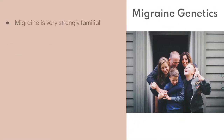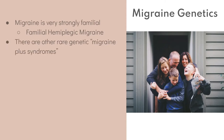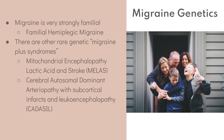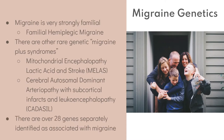Migraine is very strongly familial. There are even subtypes such as familial hemiplegic migraine, which run extremely strongly in families. There are other rare genetic migraine syndromes — a lot of these have long names, so we give them acronyms such as MILAS, which stands for mitochondrial encephalopathy with lactic acidosis and stroke, and CADASIL — cerebral autosomal dominant arteriopathy with subcortical infarcts and leukoencephalopathy. These are rare genetic conditions that have migraine plus other neurological issues, and they have helped us identify a number of genes associated with migraine.